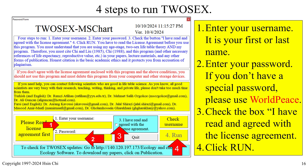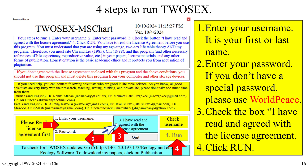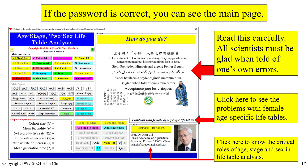Let's go through the four steps to run 2-Sex. First, enter your username, which should be your name. Next, enter your password — if you don't have a special password, please use 'WorldPeace'. Then check the box that says 'I have read and agreed with the license agreement.' Finally, click the Run button to proceed. If the password is correct, you can see the main page.